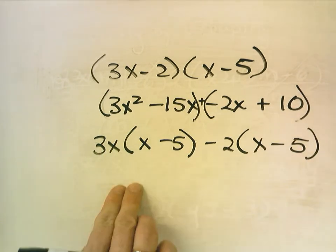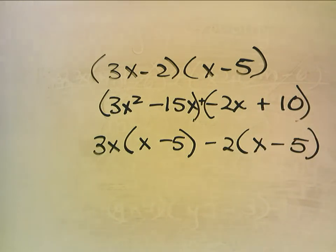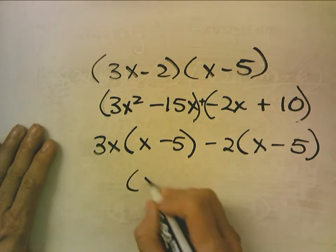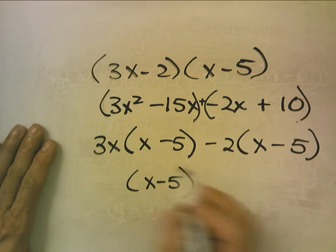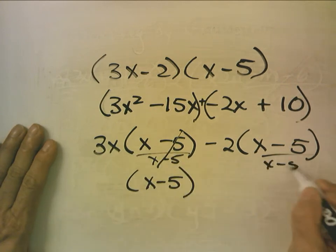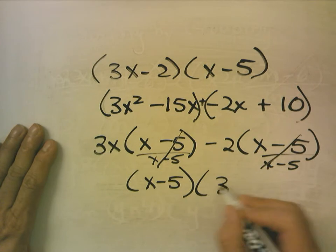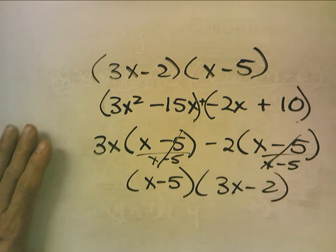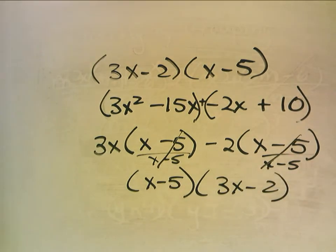Now look what I have here. Now I have a common factor. And my common factor is x minus 5. And when I divide by x minus 5 and divide by x minus 5, what's left? 3x minus 2.